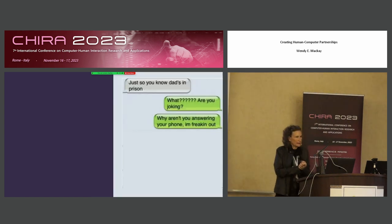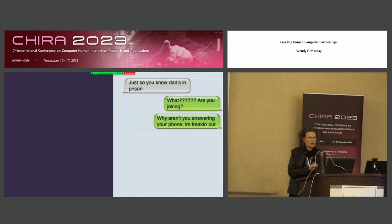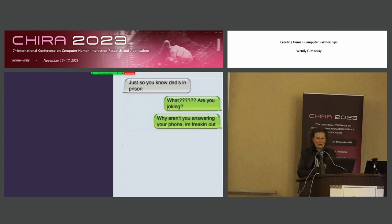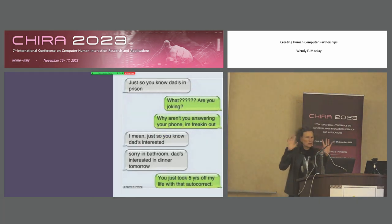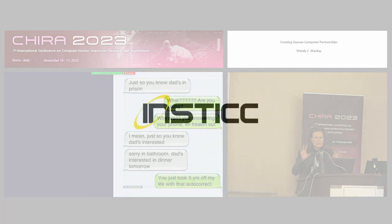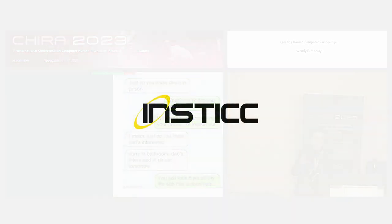Here's an example I like — a chat exchange. Someone messages: 'Dad's in prison.' The reply comes: 'What? Are you joking? Wait, why aren't you answering your phone? I'm freaking out.' Then comes the correction: 'I'm sorry, I was in the bathroom. Dad's interested in dinner tomorrow.' And the punchline: 'Your chat just took five hours.' It illustrates how ambiguous and time-sensitive communication can be.